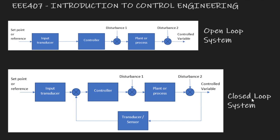We also mentioned closed-loop systems, or feedback control systems. The difference between an open-loop and a closed-loop system is simply that you have a feedback element. You have a transducer, sensor, or instrumentation system that checks the control variable — the output — takes a measurement of it, converts it into a form that can be used by the controller. There is a summing junction at that point.